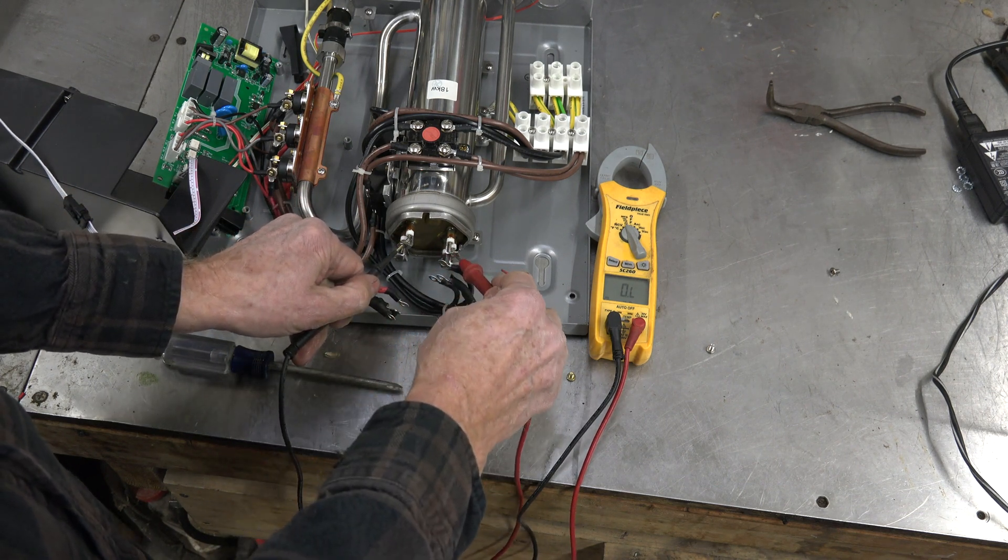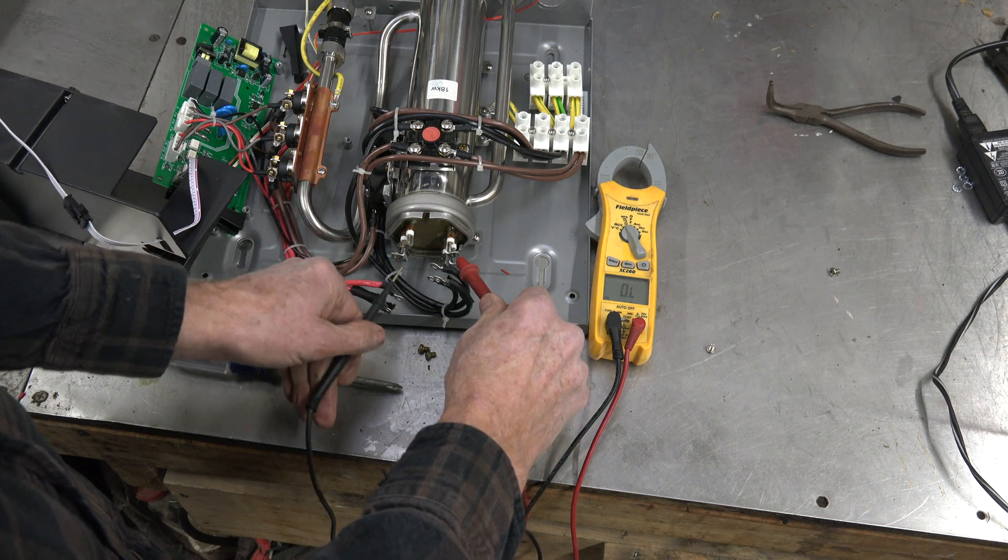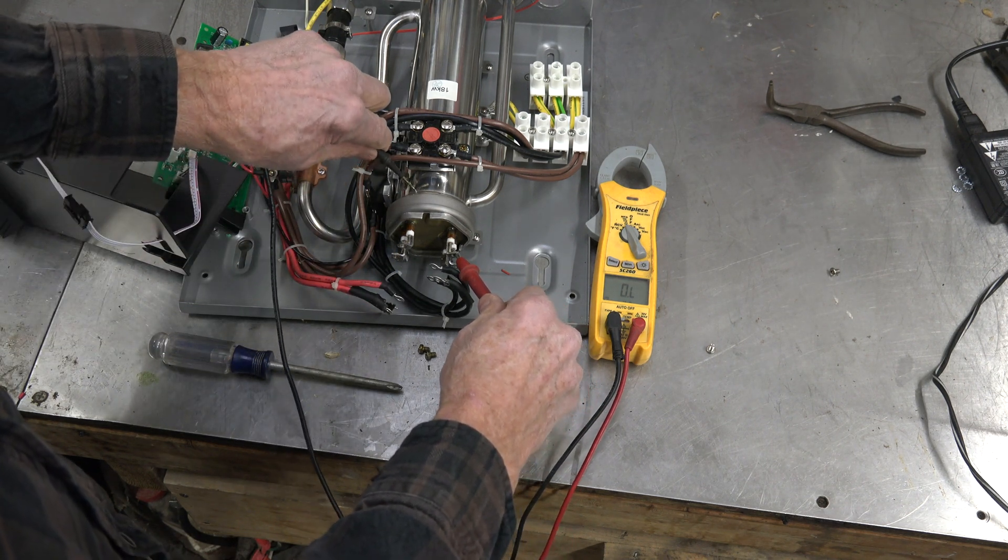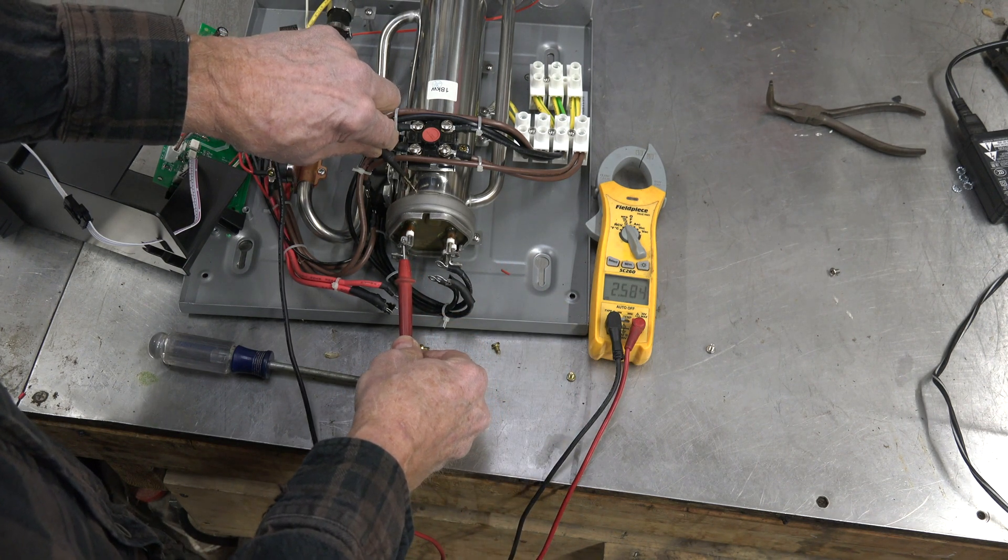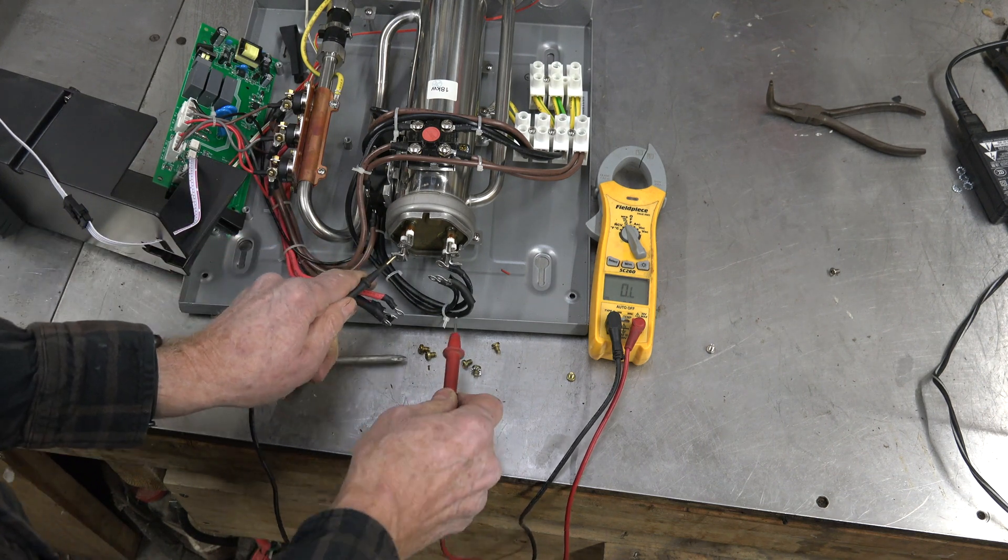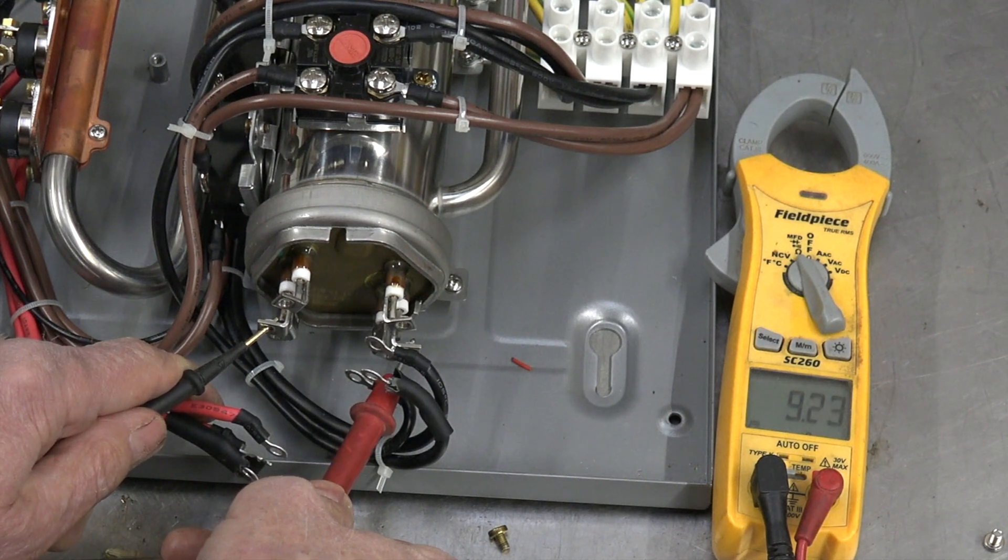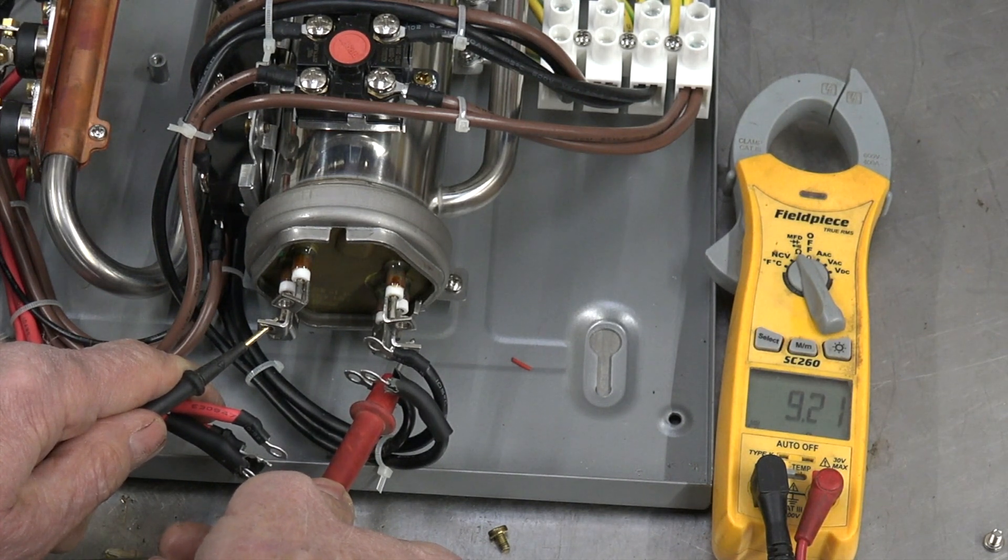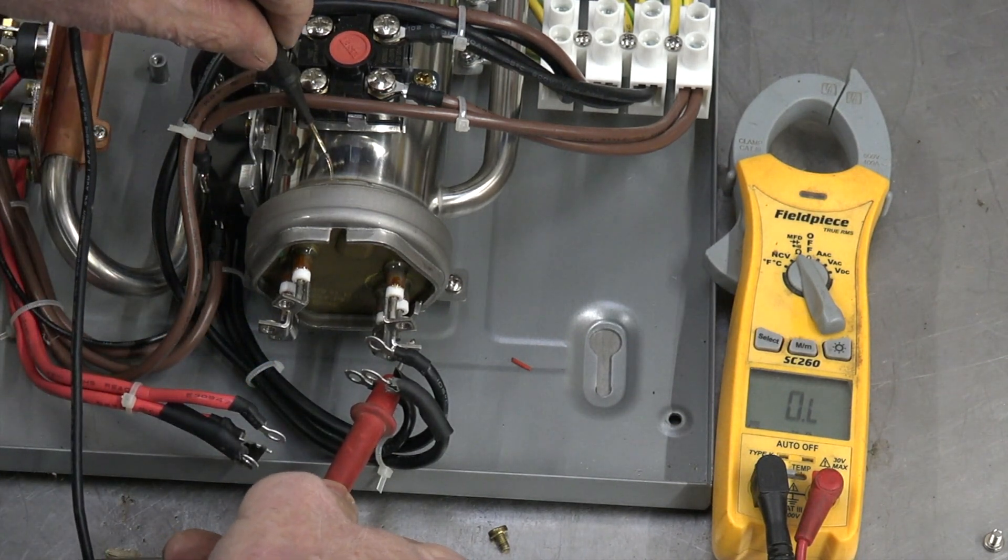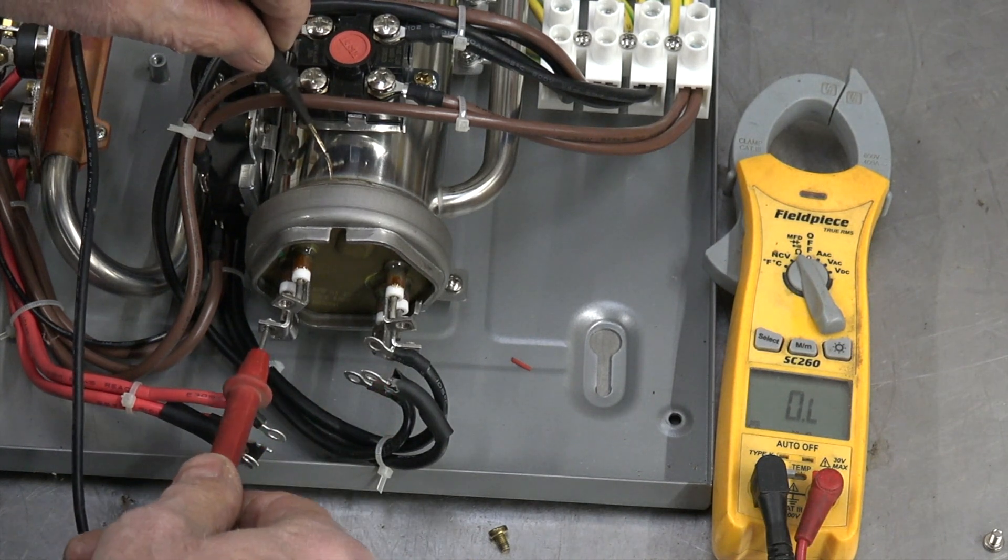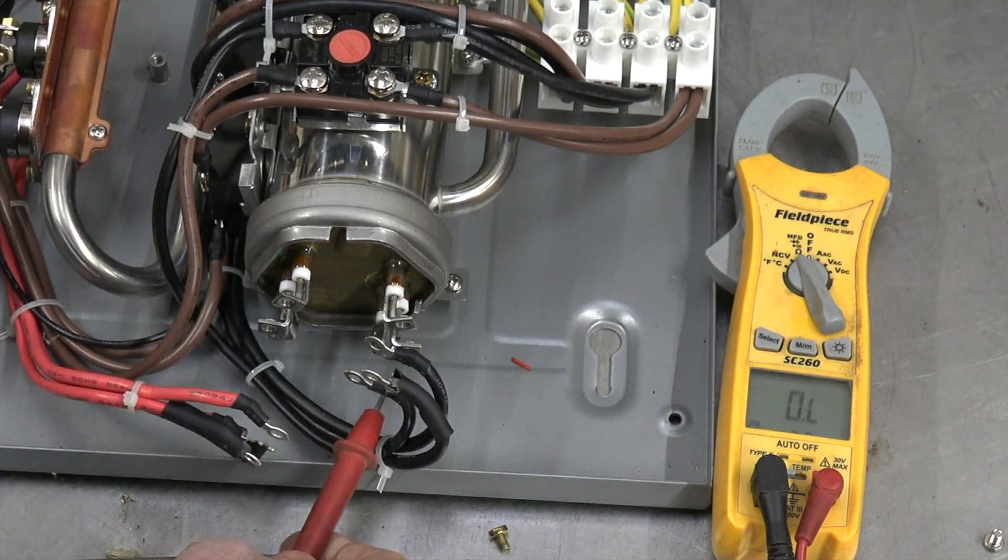Let's go a little further. We'll double-check this one again. This one is OL between the two terminals, OL on this side, and has resistance on that side. Center element: now that's 9.19 ohms - that's ohms, not kilohms. Let's go to ground: no continuity. Go over here: no continuity. So that element's good.